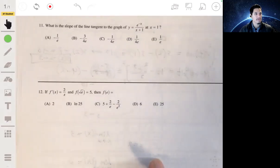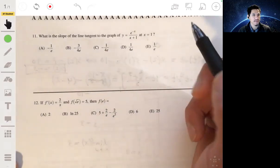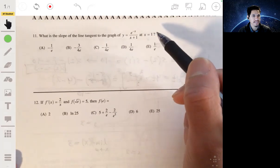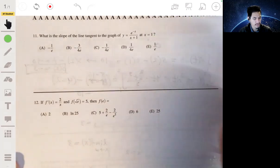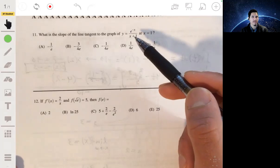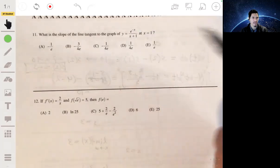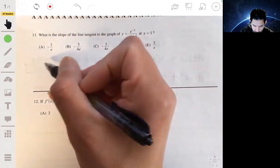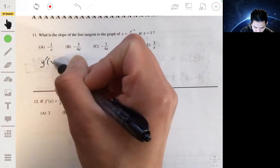All right, 11. Let's find the slope of the line tangent to the graph of y equals e^(-x) over (x+1) at x equals 1. Okay, so we just have to find the derivative of y when x is 1. So let's find the derivative first, y'(x).